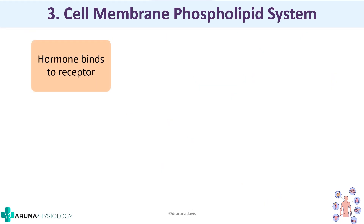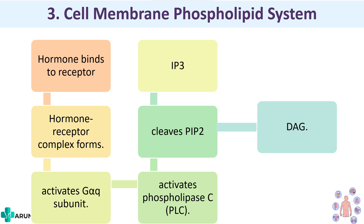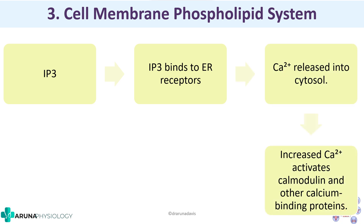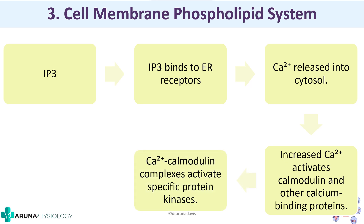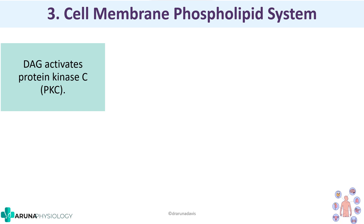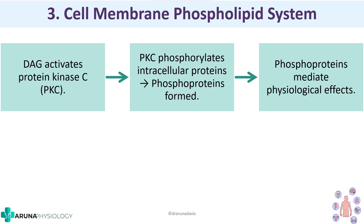In flowchart form: hormone binds to receptor → hormone-receptor complex → activation of GQ subunit → activation of phospholipase C → cleavage of PIP2 into IP3 and DAG. IP3 binds to endoplasmic reticulum receptors, releasing calcium into the cytosol. This increased calcium activates calcium-binding proteins like calmodulin, which activate specific protein kinases causing cellular response. DAG activates protein kinase C, which causes phosphorylation of intracellular proteins and cellular response.